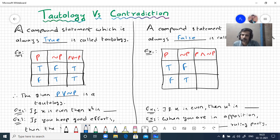Here it is false, here it is false. Therefore, the compound statement P and negation P is a contradiction.